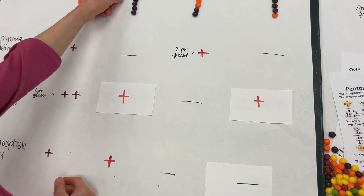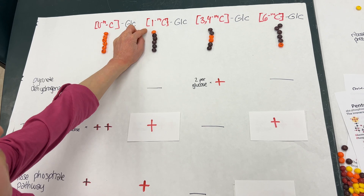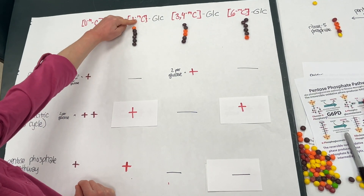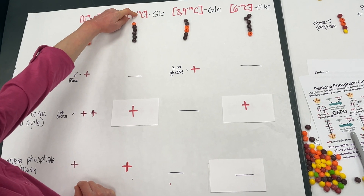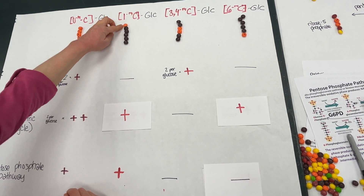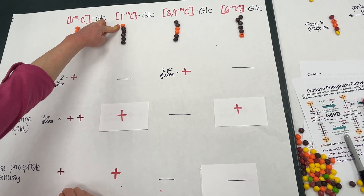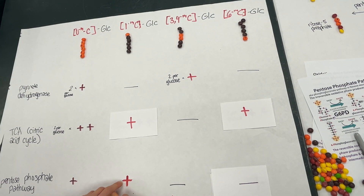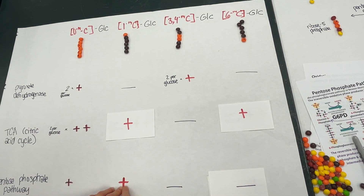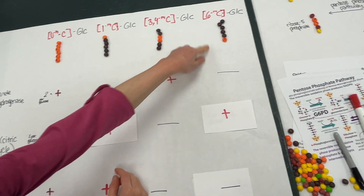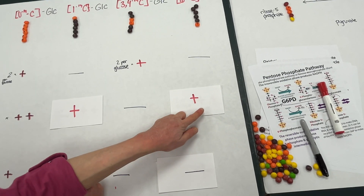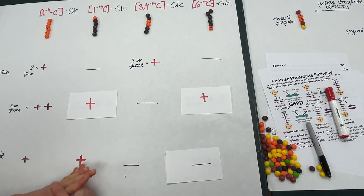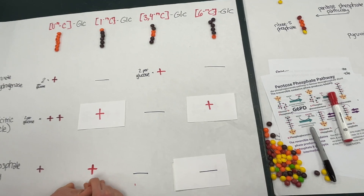If we think about this with our diagram — if we have glucose labeled at the first position with radioactive carbon-14, we'll see it released from the citric acid cycle and also released by the pentose phosphate pathway. If we look at the sixth position, we see it released from the TCA but not from the pentose phosphate pathway. So by comparing these two, we're able to determine activity through the pentose phosphate pathway.